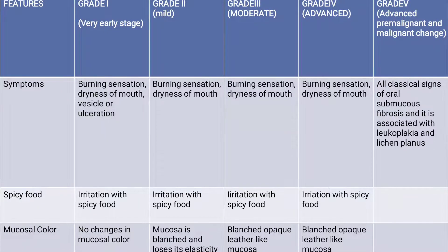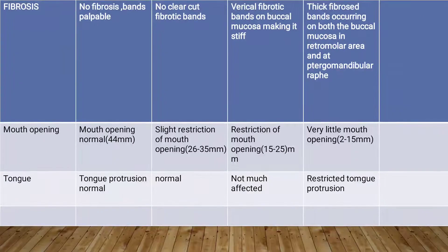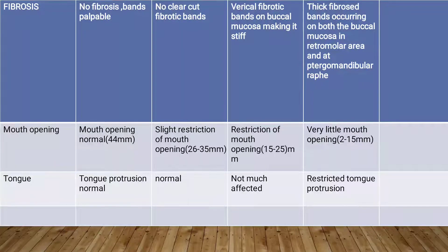Regarding mucosal changes: in grade one there is no color change in mucosa; in grade two the mucosa is blanched with loss of elasticity; in grade three there is blanched or baked leather-like mucosa; grade four also shows blanched or baked leather-like mucosa; grade five is associated with leukoplakia and lichen planus. For fibrotic changes: in grade one, no fibrosis or bands are palpable; in grade two, no clear-cut fibrotic band is present; in grade three, vertical fibrotic bands on the buccal mucosa are present making it stiff; in grade four, thick fibrotic bands occur on both sides of the buccal mucosa from the retromolar area to the pterygomandibular raphe.